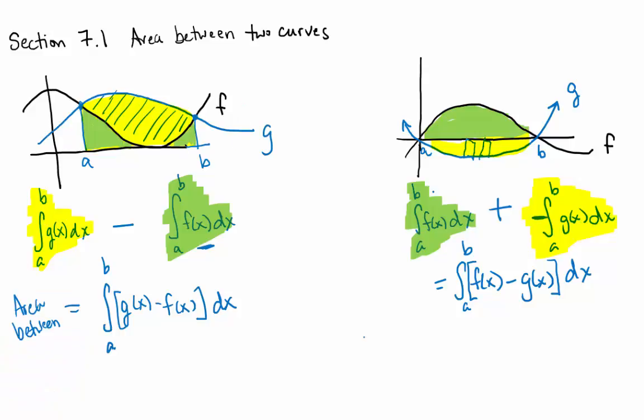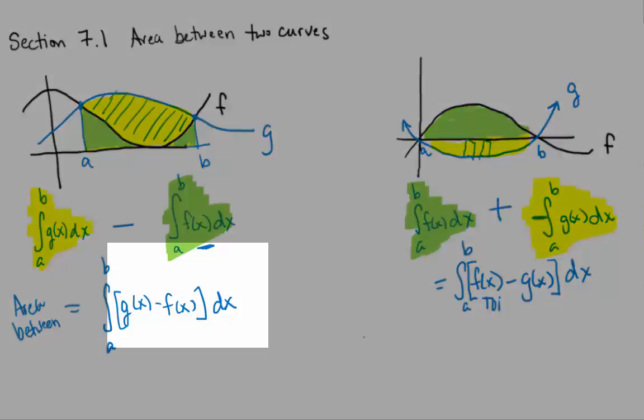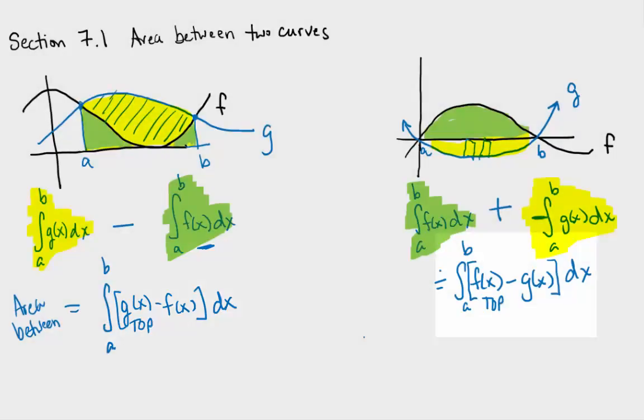Notice that whichever function is on top is going to be the first function. Over here, g was on top. Over here, f was on top. And whichever one is on the bottom is going to be the second function. And as long as you keep that consistent, you'll always get a positive area.